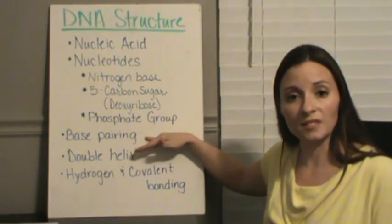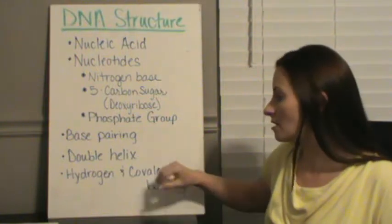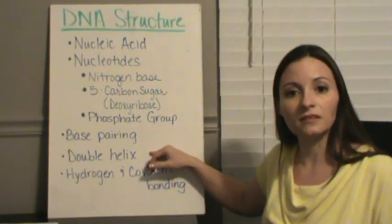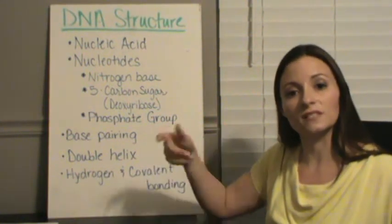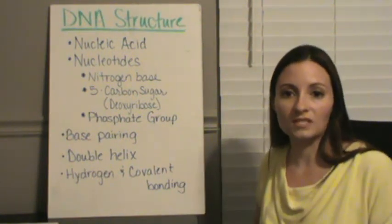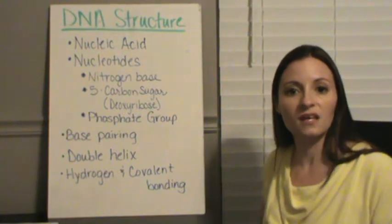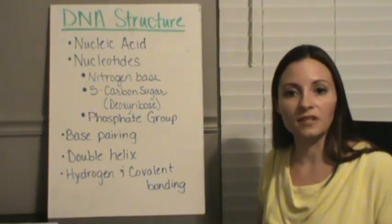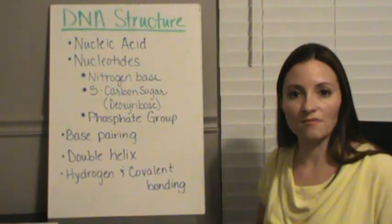DNA holds the rules for base pairing, which we're going to talk about, and it's in the shape of a double helix, meaning that it's like a twisted ladder. And finally, there are two types of bonds that hold DNA together, both hydrogen bonds and covalent bonds in different areas, and we're going to talk about where those are also.